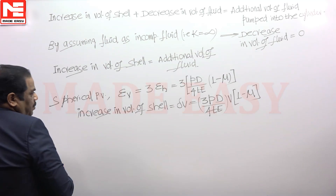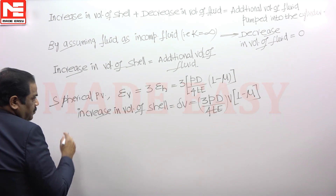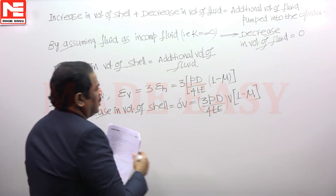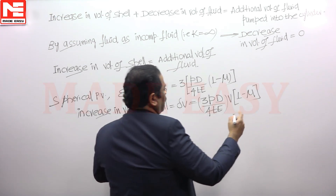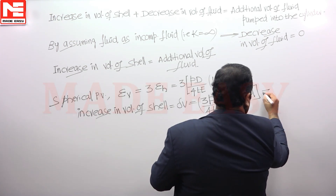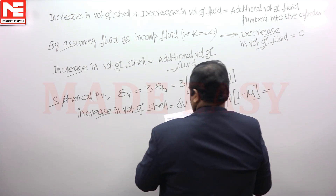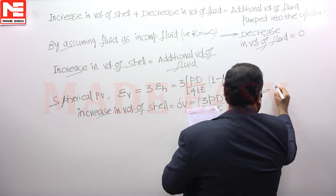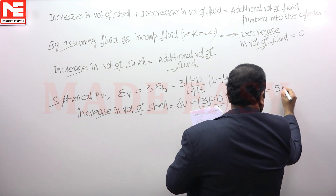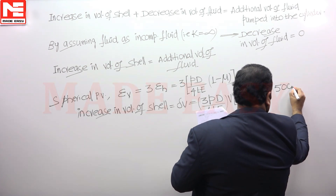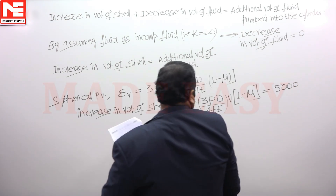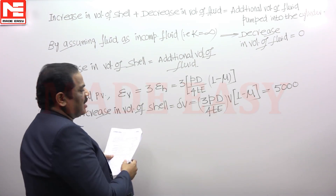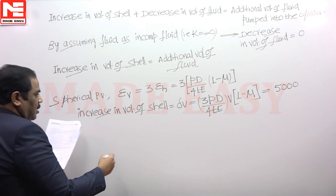This expression should be equated to the additional volume of fluid, which is given as 5000 mm³. By substituting the given data, you can find out the pressure.